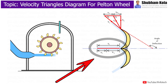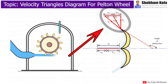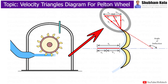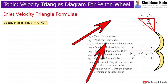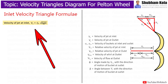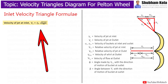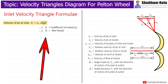The inlet velocity triangle is drawn at the splitter and the outlet velocity triangle is drawn at the outer edge of the bucket. The inlet and outlet velocity triangles of the Pelton Wheel are shown here, where V1 is the velocity of the jet at inlet, given by the formula V1 = √(2gH), where H is the net head.